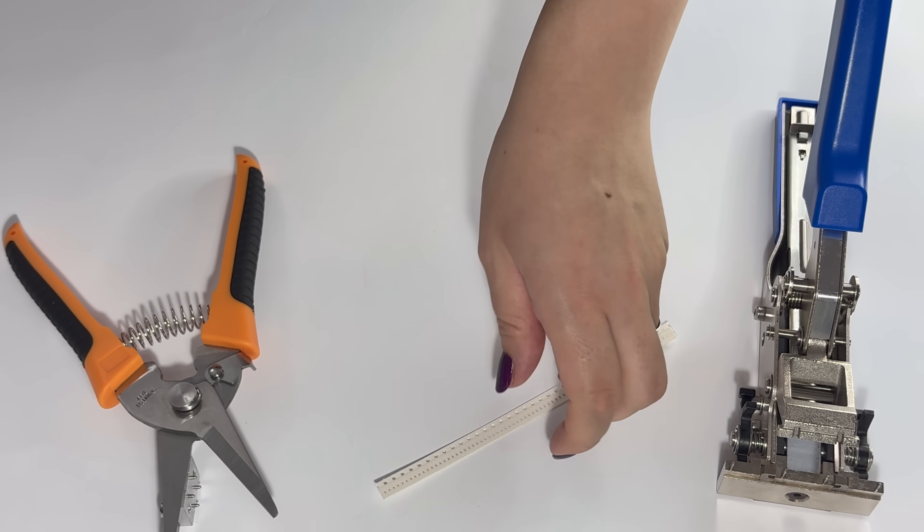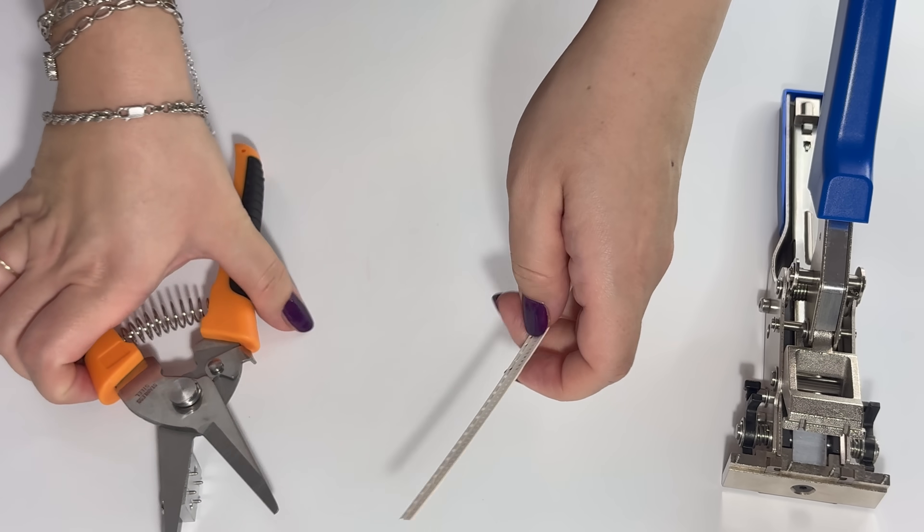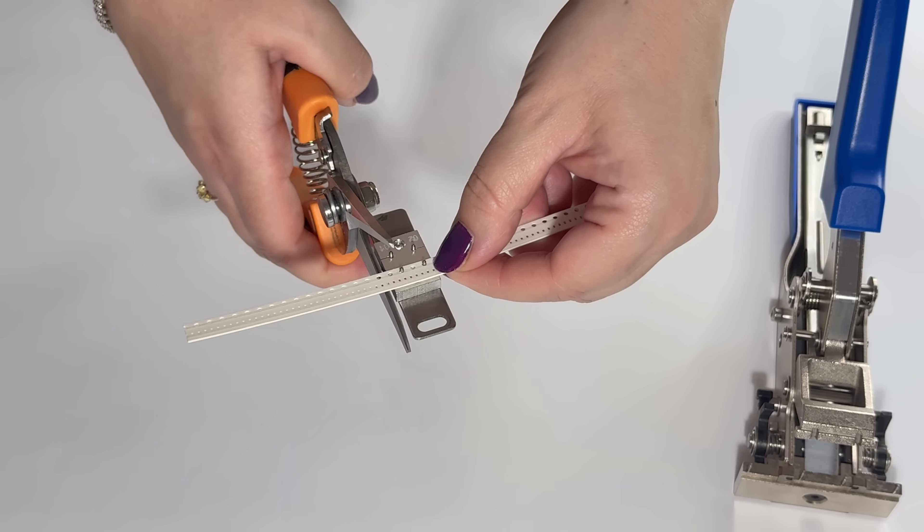The first thing you do is we're going to cut our tape using our scissors with the alignment block.